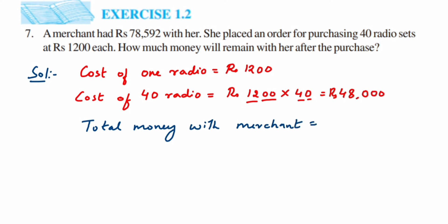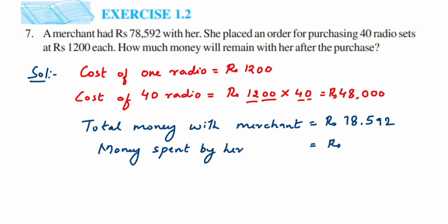Total money with the merchant is rupees 78,592. Money spent on radios is rupees 48,000. Now subtracting: 2 minus 0 is 2, 9 minus 0 is 9, 5 minus 0 is 5, 8 minus 8 is 0, and 7 minus 4 is 3. So rupees 30,592 is still left.